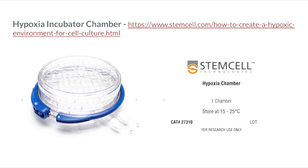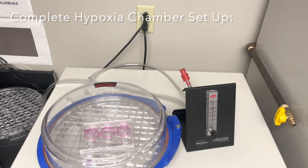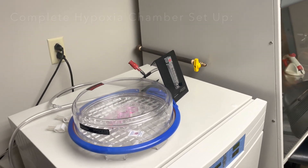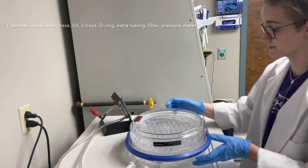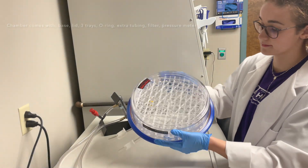Now we will move on to a second method of creating a hypoxic environment for cell culture — this involves using a hypoxia chamber. A hypoxia incubator chamber is a sealed container that creates a low oxygen environment for cells. The hypoxia chamber shown in the video is from Stem Cell Technologies. For a more in-depth explanation of working and purging the hypoxia chamber, see their website for videos and other supplemental materials. Before starting, let's familiarize ourselves with the parts of the chamber and how to assemble and disassemble it. Here you can see an overview of what our hypoxia chamber looks like when it's set up.